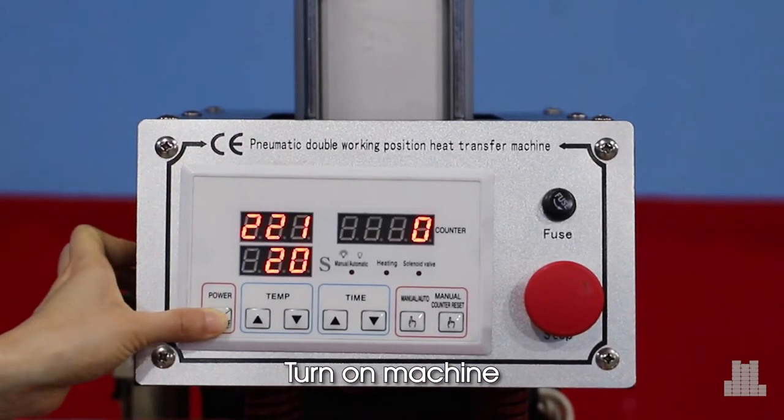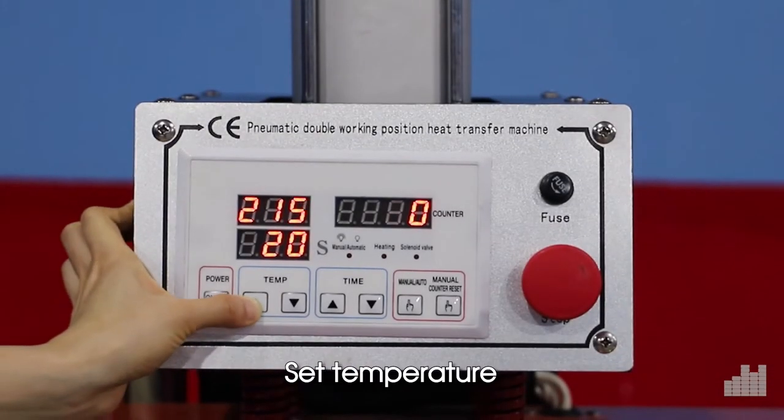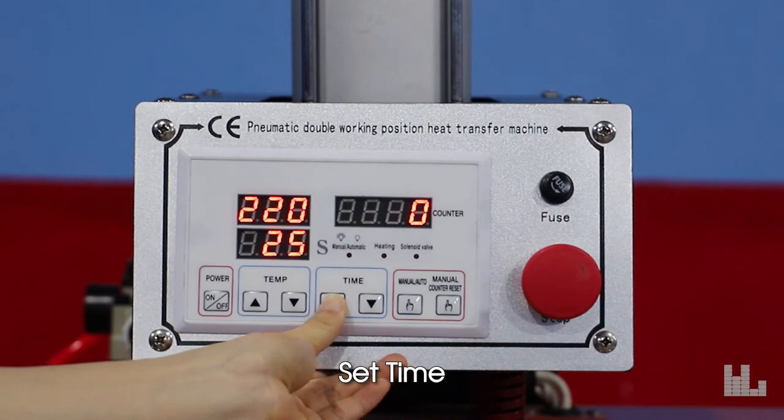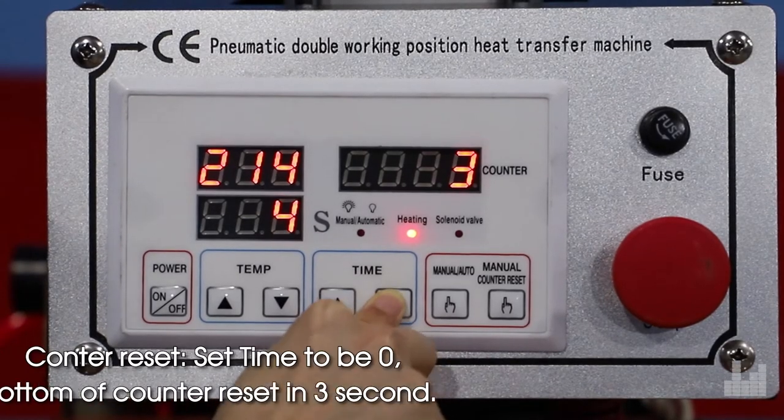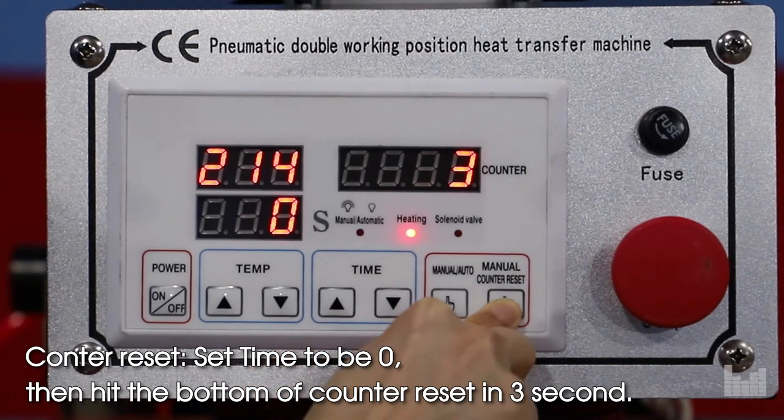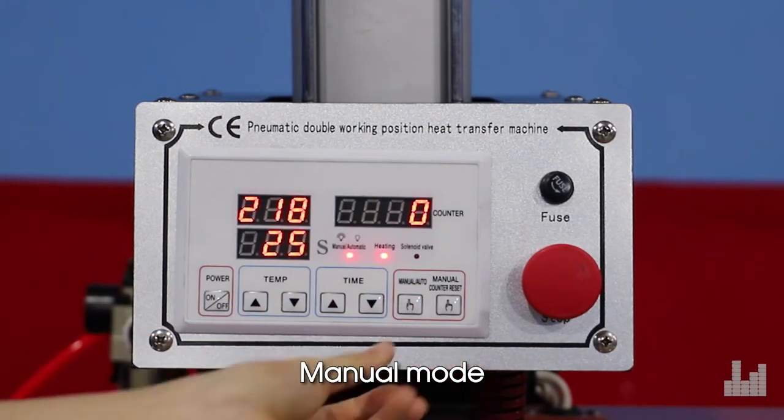Turn on the machine. Set the temperature and time. For count and reset, set time to be 0, then hit the button of count and reset within 3 seconds for manual mode.